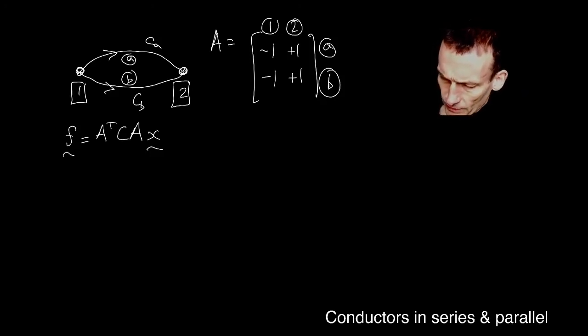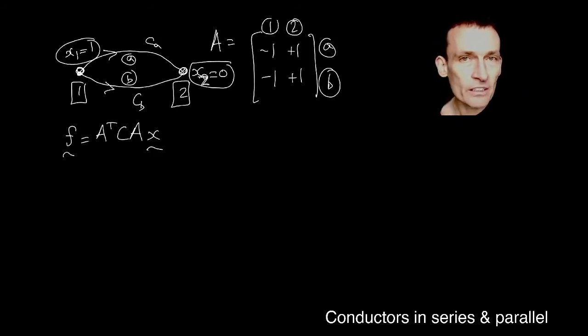And what I want to do is, of course, remember, if I'm going to work out the effective conductance, it's the current out of node one when it's set to be unit voltage. And in this case, node two is grounded. There's no choice here because these are the only two nodes.